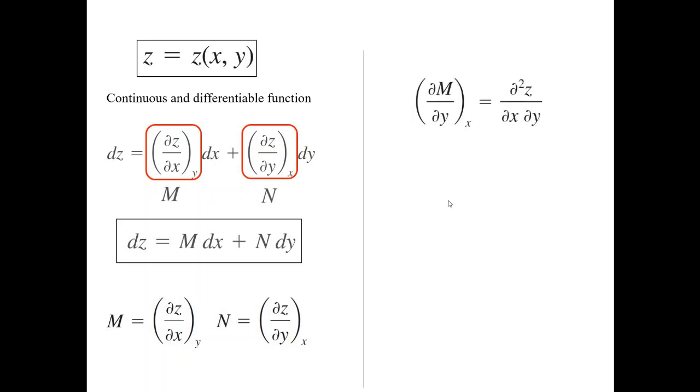Let us denote the partial derivative of z with respect to x as M, and with respect to y as N. So we can write: dz = M·dx + N·dy, where M = ∂z/∂x and N = ∂z/∂y. Now let us differentiate further — we differentiate M with respect to y, giving ∂²z/∂x∂y, and we differentiate N with respect to x.